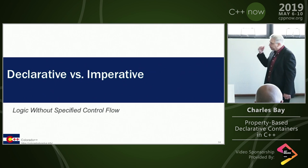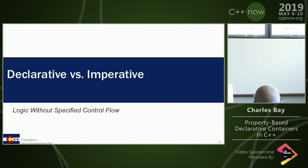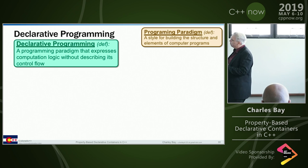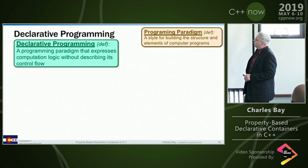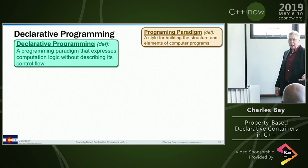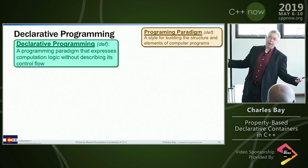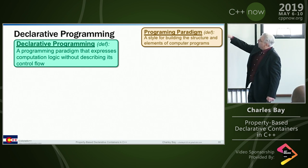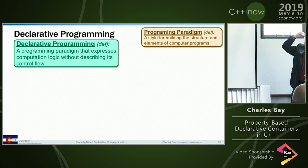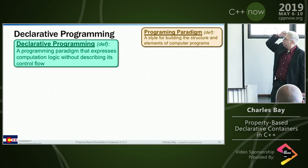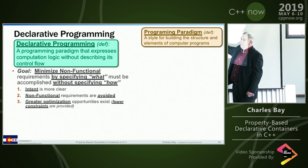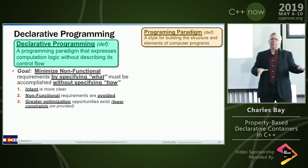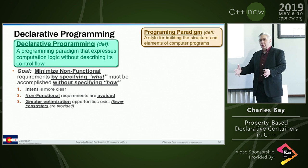Let's contrast declarative and imperative. Declarative: logic without specified control flow. It's a programming paradigm - C++ is a multi-paradigm language, so declarative is one you might choose. It expresses computation logic without describing the control flow. I want to minimize discussing technical constraints and focus on the real functional issues. I want to specify what I want but not how to get there. If I take away 'how to get there,' I don't have to worry about as much. But I do give up some control - however it's done, I have to live with the results.